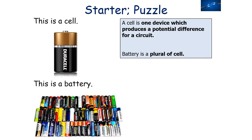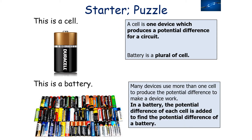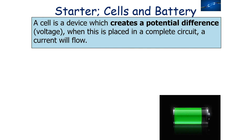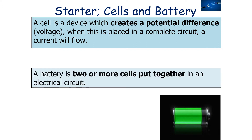There are two particular objects which can produce a potential difference for a circuit: cells and batteries. A cell is one device which produces a potential difference for a circuit, whilst a battery is a plural of a cell — two or more cells put together. Many devices use more than one cell, and in a battery the potential difference of each cell is added together to find the total potential difference.